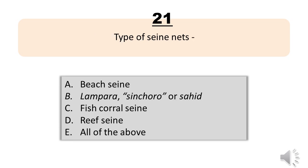Number 21. Type of seine nets. A. Beach seine. B. Lampara, Sinkoro or Saheed. C. Fish corral seine. D. Reef seine. E. All of the above. The correct answer is Letter E. All of the above.